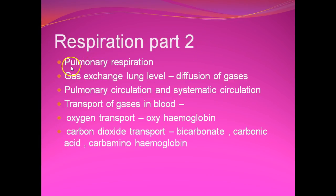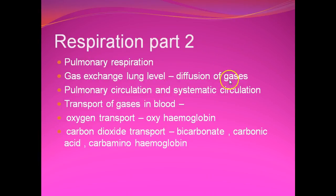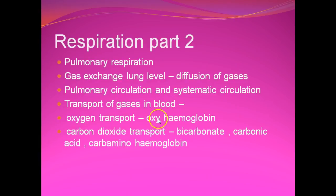In Part 2, we are going to discuss pulmonary respiration and gas exchange at the lung level — that is the diffusion of gases, oxygen and carbon dioxide: adding of oxygen and removal of carbon dioxide. Then pulmonary circulation and systematic circulation, that is the double circulation. Then transport of gases in blood: oxygen transport as oxyhemoglobin, and carbon dioxide transport as bicarbonate, carbonic acid, and carbaminohemoglobin.